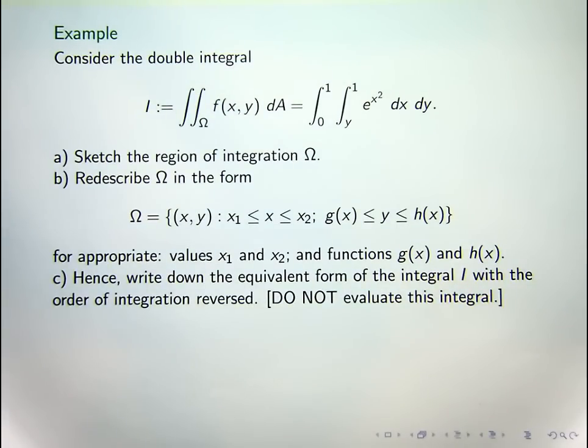Well the problem is that e to the x squared doesn't have a nice anti-derivative, right? What's the anti-derivative of e to the x squared? Well, you can't express it in terms of basic elementary functions.